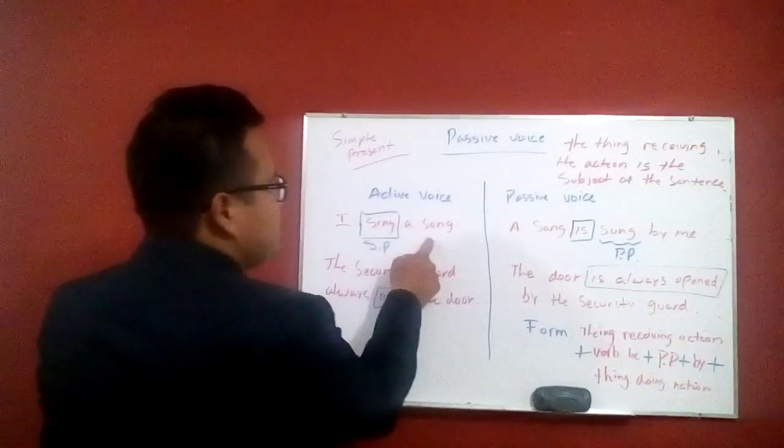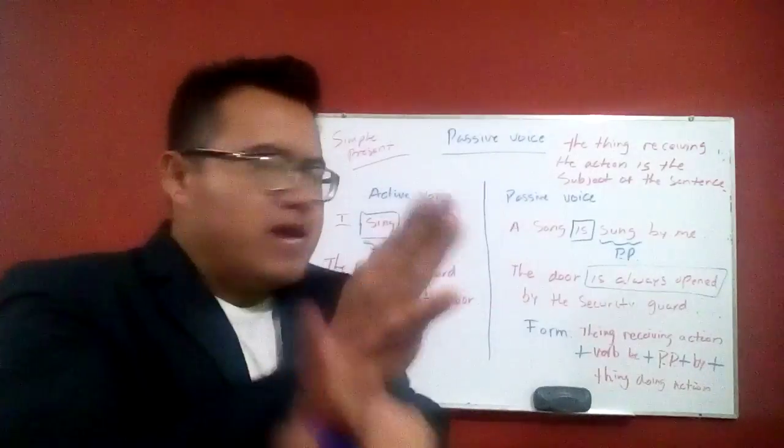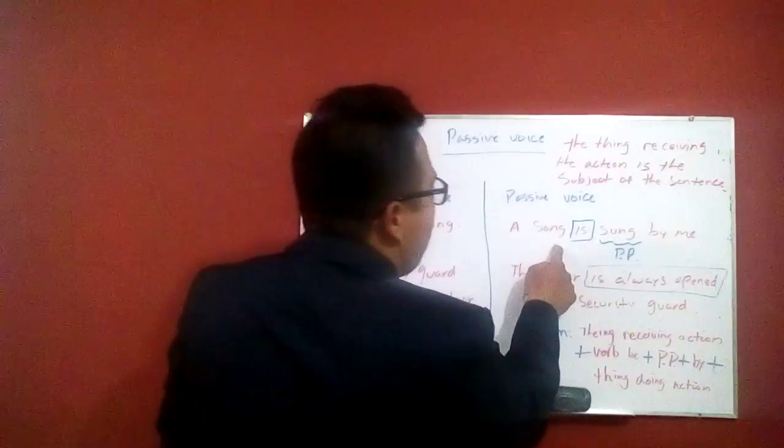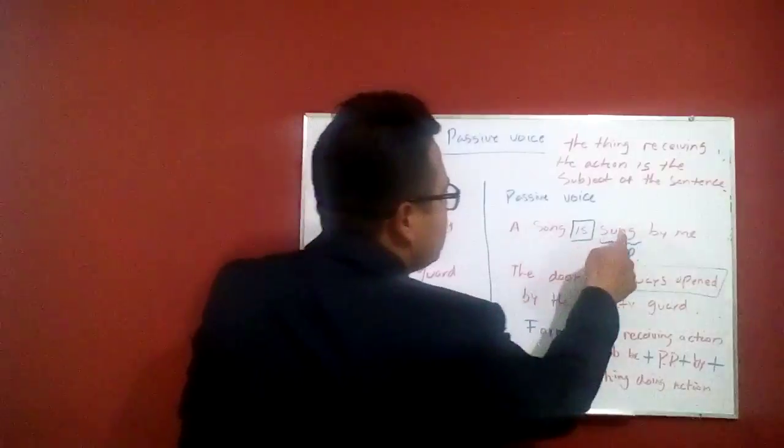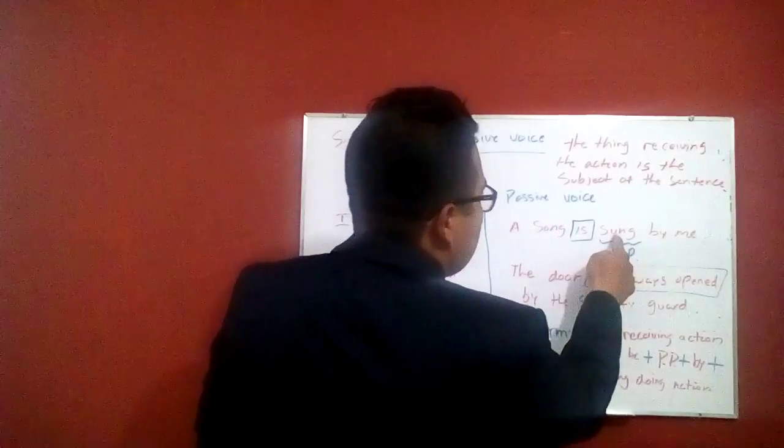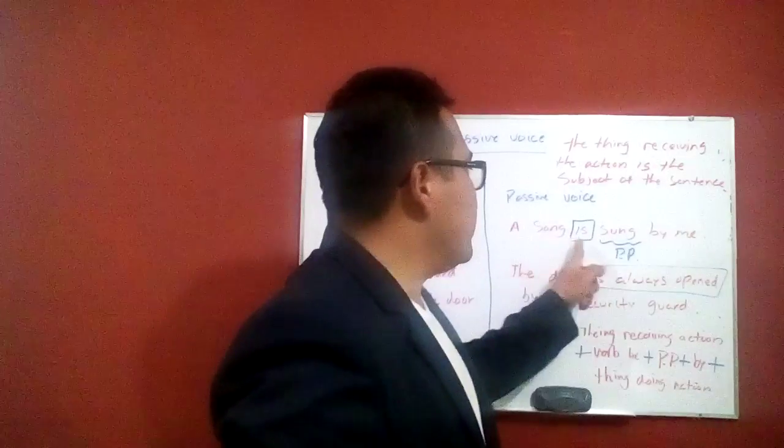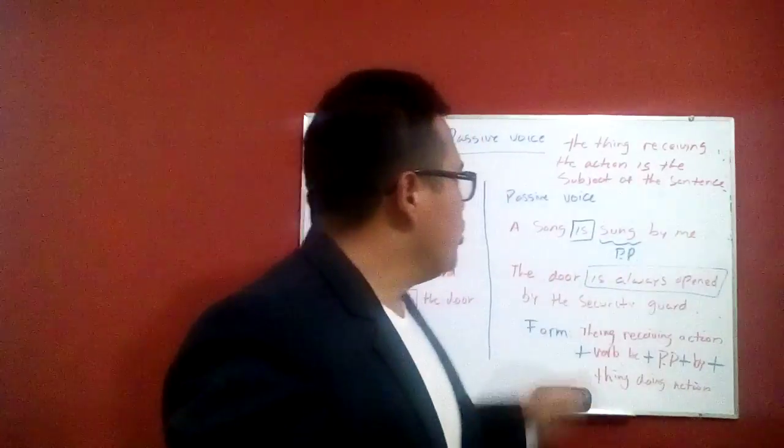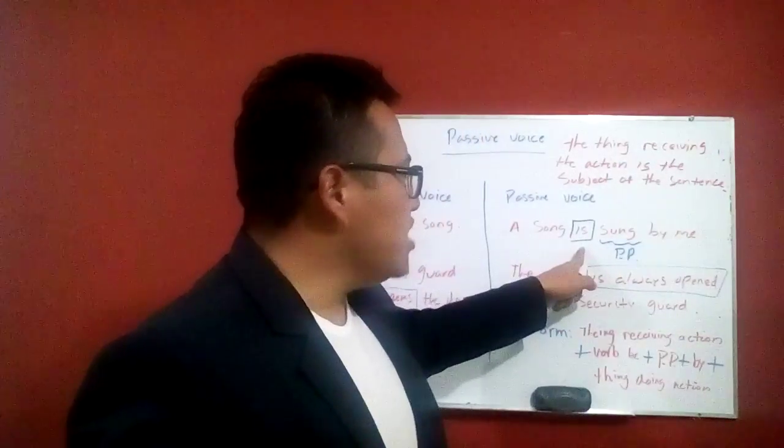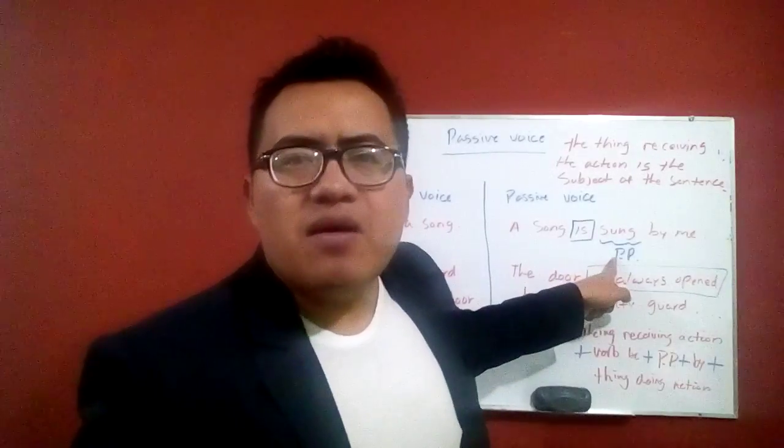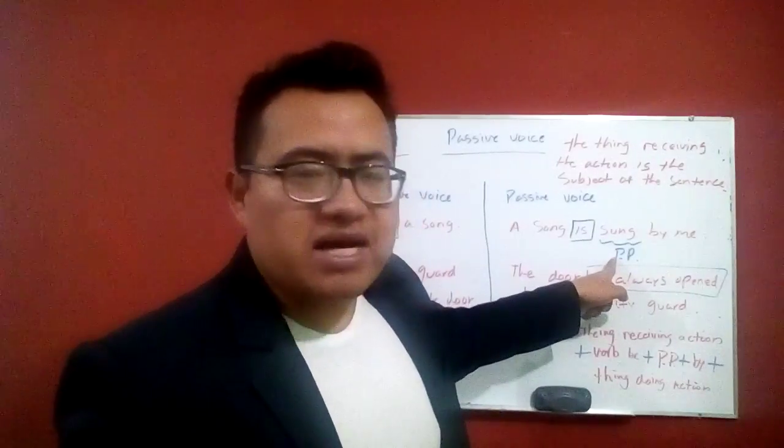So for example, here, I sing a song. We're going to flip it. And it's going to be a song is sung by me. A song is sung by me. Notice that it's verb be conjugated plus past participle.